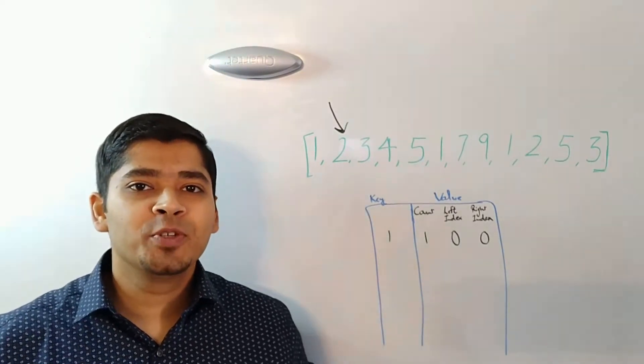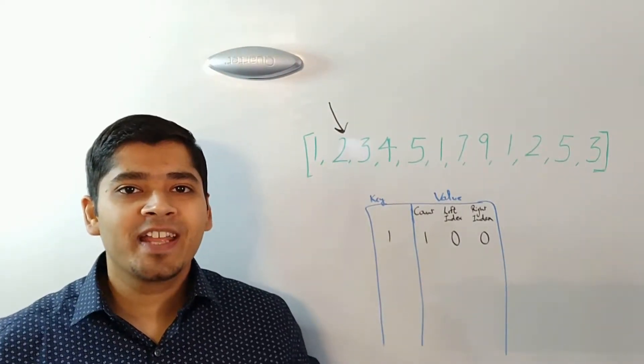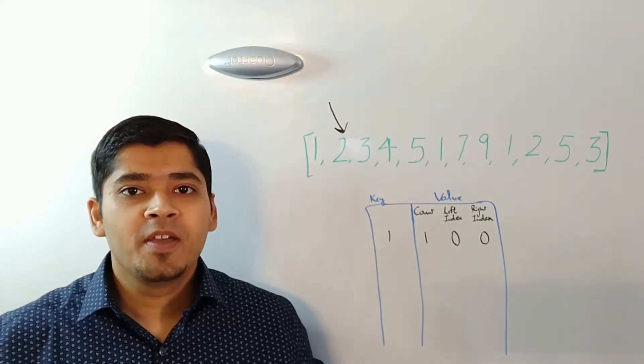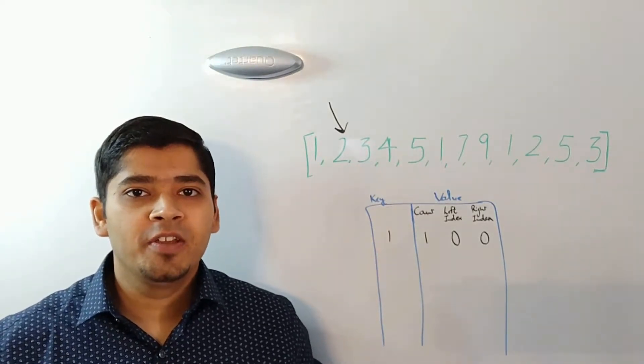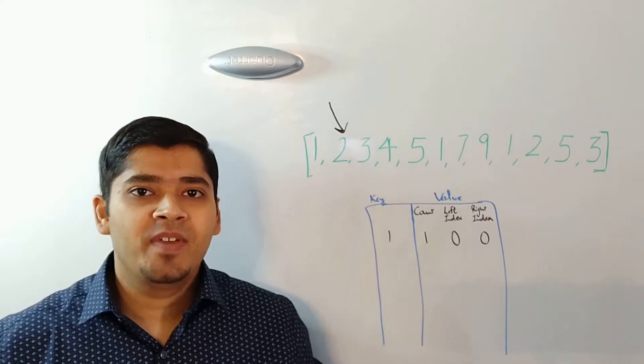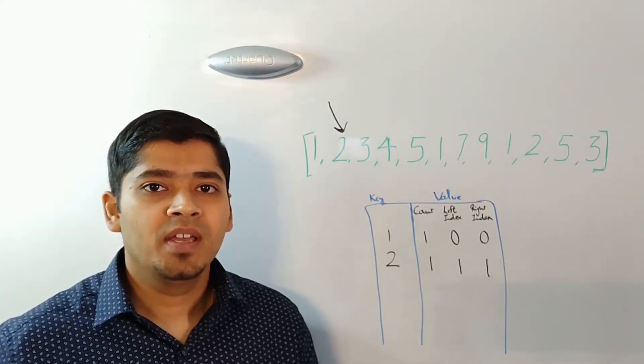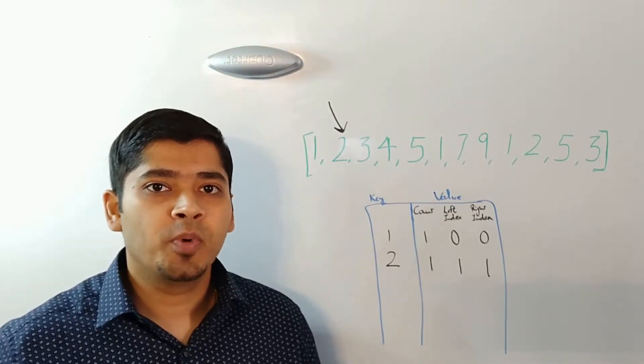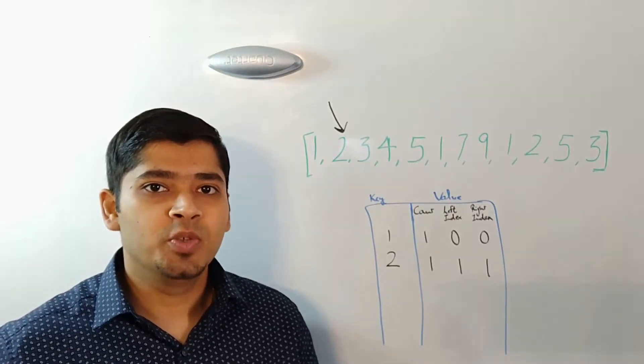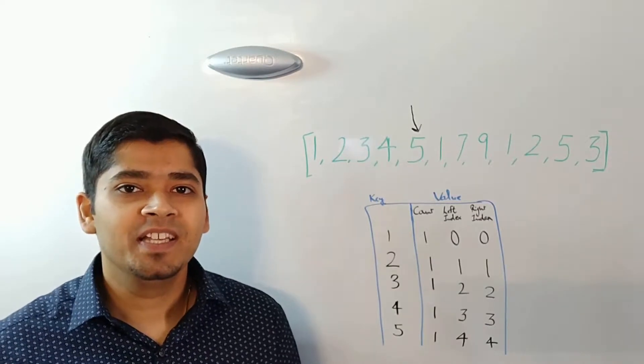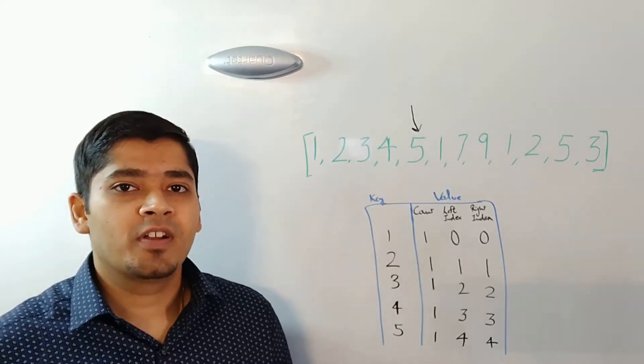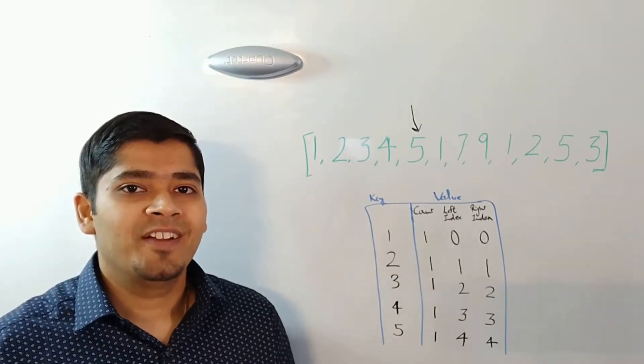Next we move to 2. Since 2 does not exist in our hash map, we again add the entry for key 2 in the same way. As you can see the count is again 1 and the left index and right index both point to 1 for the key 2. Similarly we do the same thing for key 3, 4 and 5.